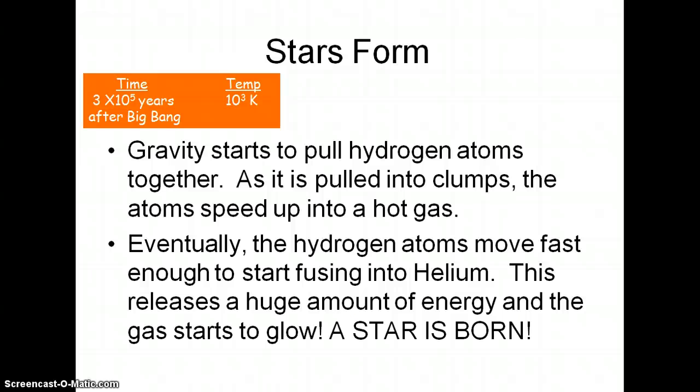Three times ten to the fifth years after the Big Bang, gravity starts to pull hydrogen atoms together. They get pulled into clumps, the atoms start to speed up into a hot gas, and eventually the hydrogen atoms are moving so fast that they start fusing — slamming into one another and making helium. This releases a huge amount of energy and the gas starts to glow. A star is born! This is what our sun does: it takes hydrogen, slams it together, makes helium, and releases a great amount of energy.